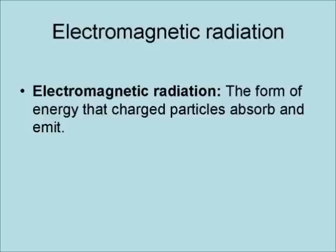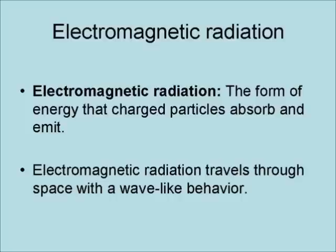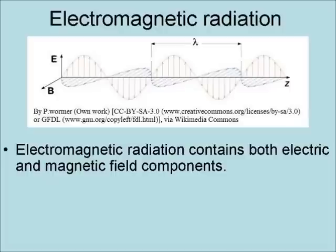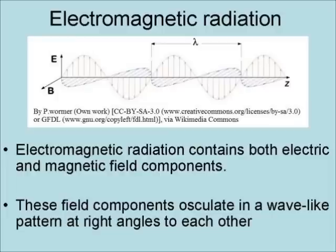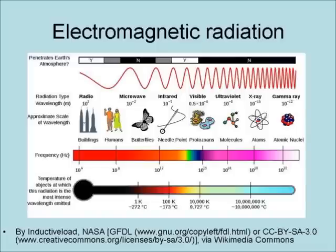Electromagnetic radiation is the form of energy that charged particles absorb and emit. Electromagnetic radiation travels through space with a wave-like behavior, and contains both electric and magnetic field components. These field components oscillate in a wave-like pattern at right angles to each other. This results in the electromagnetic spectrum, which includes radio waves, microwave, infrared, visible light, ultraviolet, X-ray, gamma rays, and cosmic rays. Each type is distinguished by its wavelength.